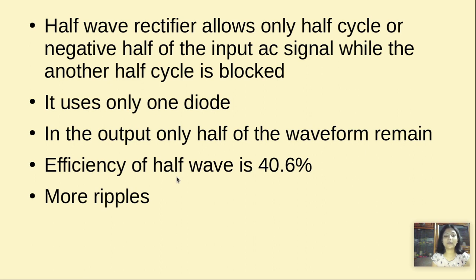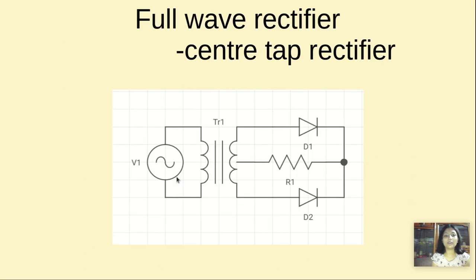Now let us come to the full-wave rectifier. First, we will talk about the center-tap rectifier. In a center-tap rectifier, we use two diodes, D1 and D2. It is called a center-tap rectifier because we connect R1 to the center tap of the transformer.